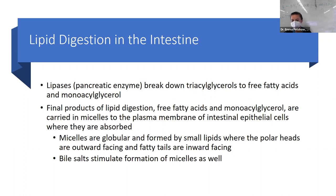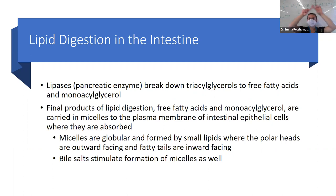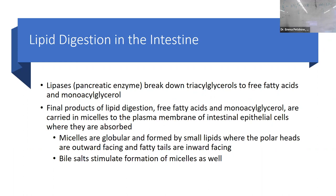The final products are free fatty acids and monoacylglycerol, carried into micelle cells. Micelles are globular structures formed by small lipids where the polar heads face outward — just like a mini cell membrane — and the fatty content faces inward. Bile salts themselves stimulate the body to form micelles. If the gallbladder has any pathology affecting bile acid secretion, all of our lipid absorption and transport is affected — which is why you can see steatorrhea: fat remaining in the intestinal lumen and passing out via stool.